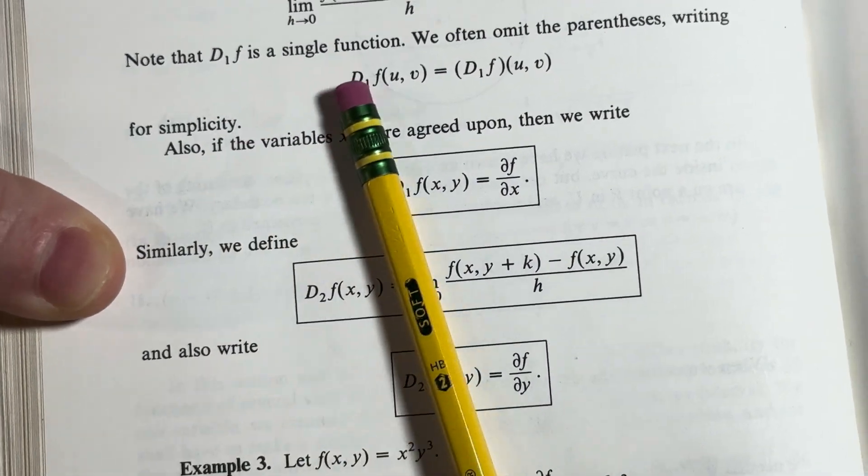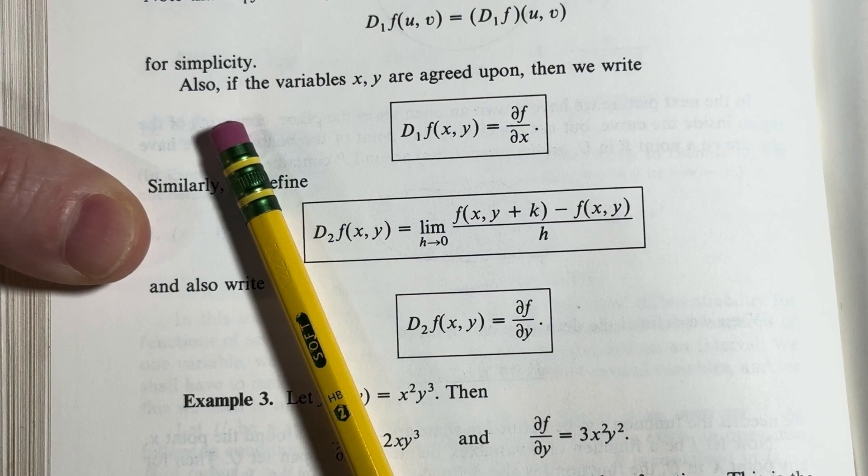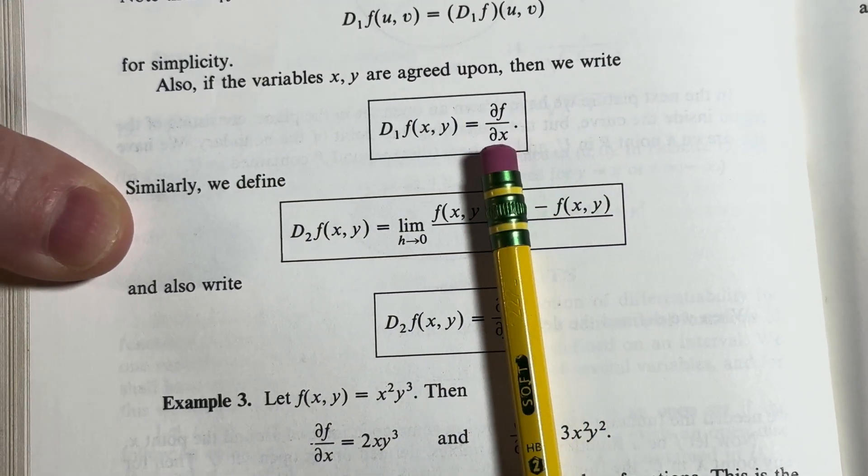It's just an interesting way to think about it, right? It's important. Also, if the variables x, y are agreed upon, then we write it like this.